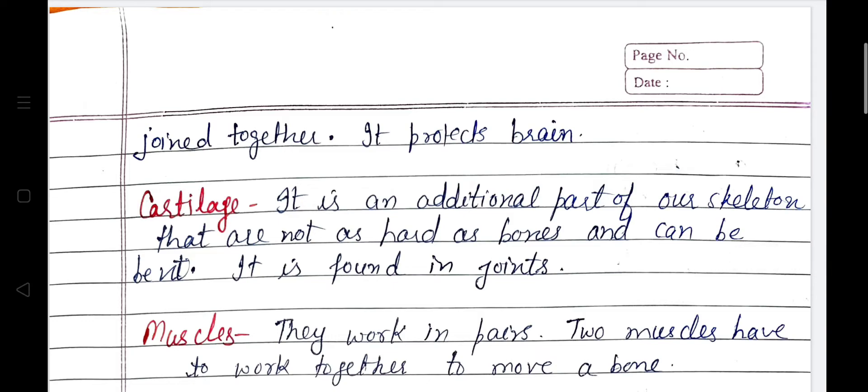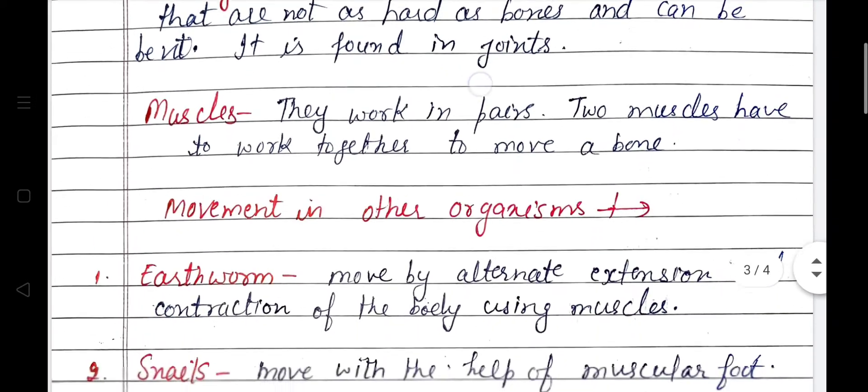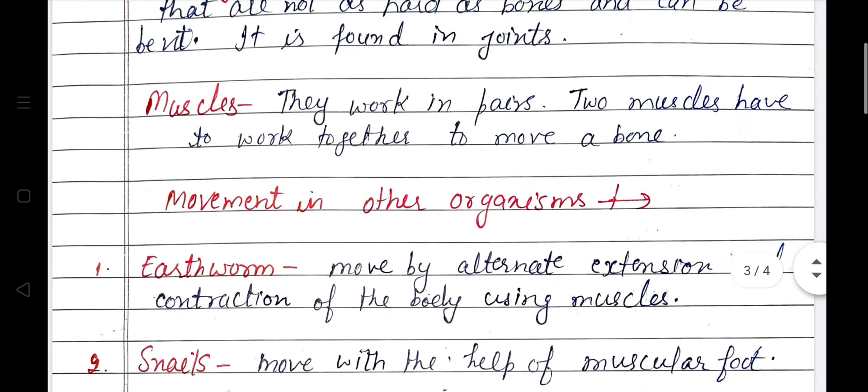Cartilage — it is an additional part of our skeleton that is not as hard as bones and can be bent. It is found in joints. Muscles — they work in pairs; two muscles have to work together to move a bone.